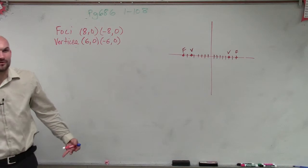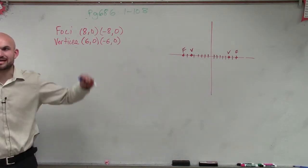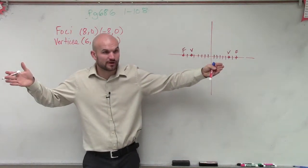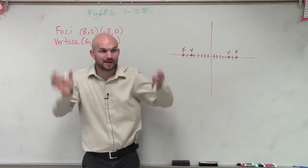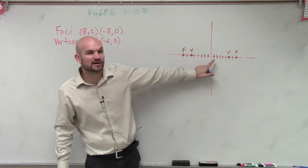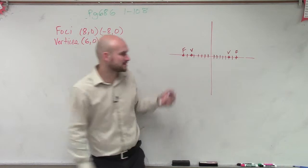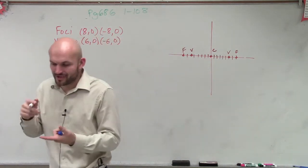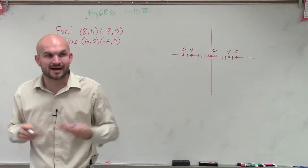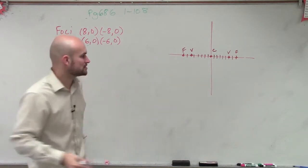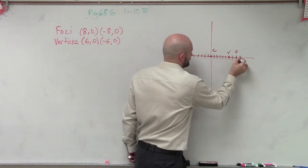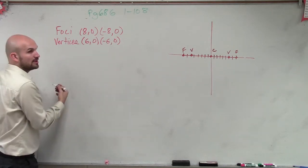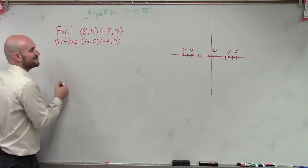Now, what else lies on our transverse axis? The foci, the vertices, and the center. Remember, the center is midway between our two vertices, and the center is also midway between our two foci. So you can see the midpoint of both of those points is going to be (0, 0). The center, the foci, and the vertices all lie on our transverse axis. So is this axis horizontal or vertical? Horizontal. So now that we know it's horizontal, we know the formula to use — we're going to use the horizontal formula.